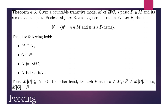Theorem 4.5: Given a countable transitive model M of ZFC, a poset P ∈ M with associated complete Boolean algebra B, and generic ultrafilter G over B, define N = {n^G : n ∈ M and n is a P-name}. Then the following hold: M ⊊ N; G ∈ N; N models ZFC; N is transitive. Thus M[G] ⊆ N. On the other hand, for each P-name n ∈ M, n^G ∈ M[G]. Thus M[G] = N.